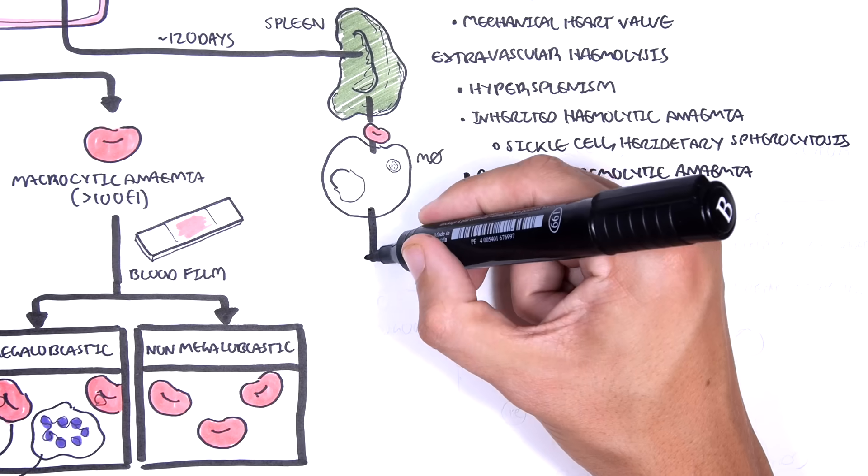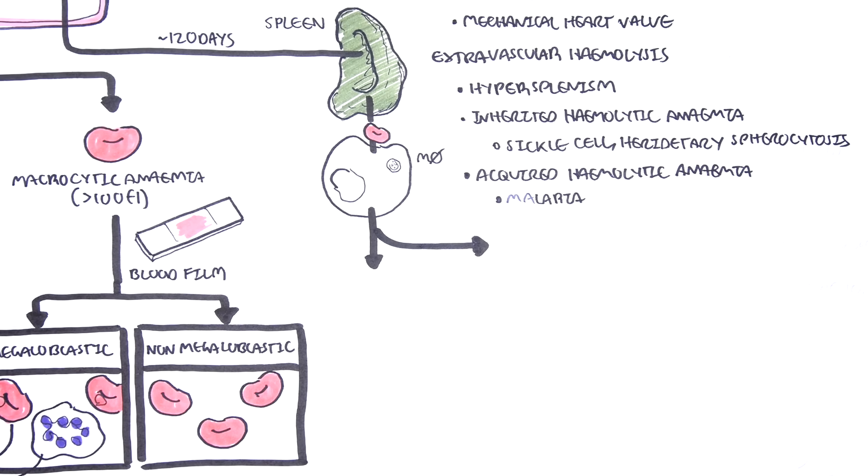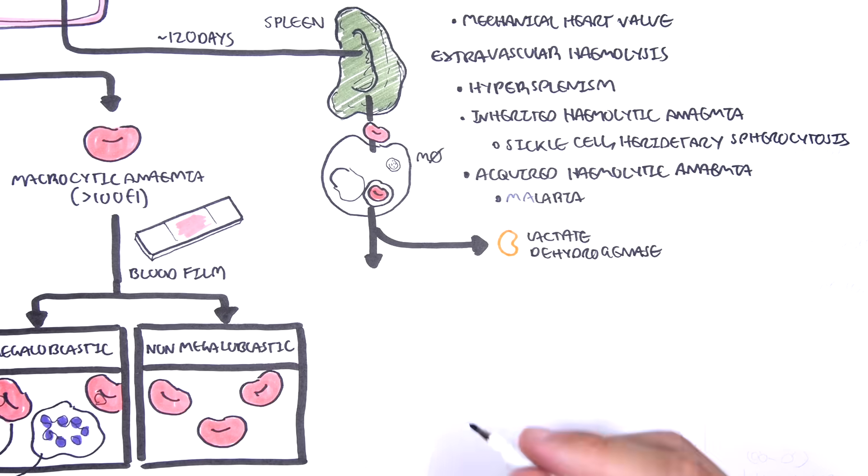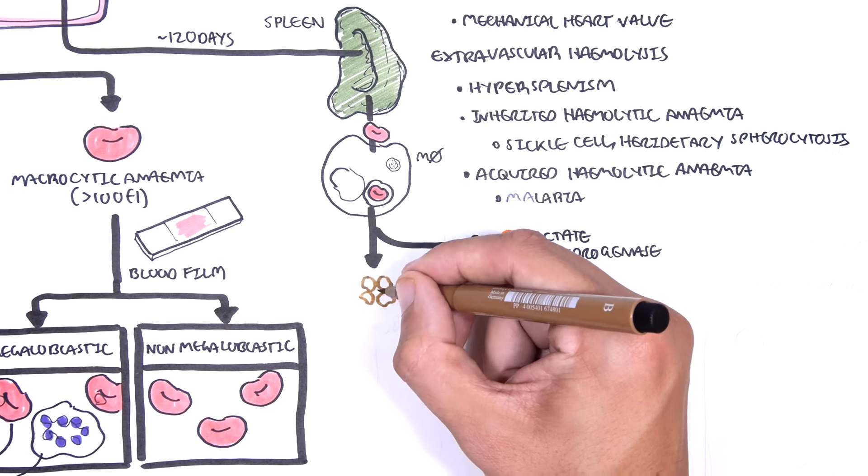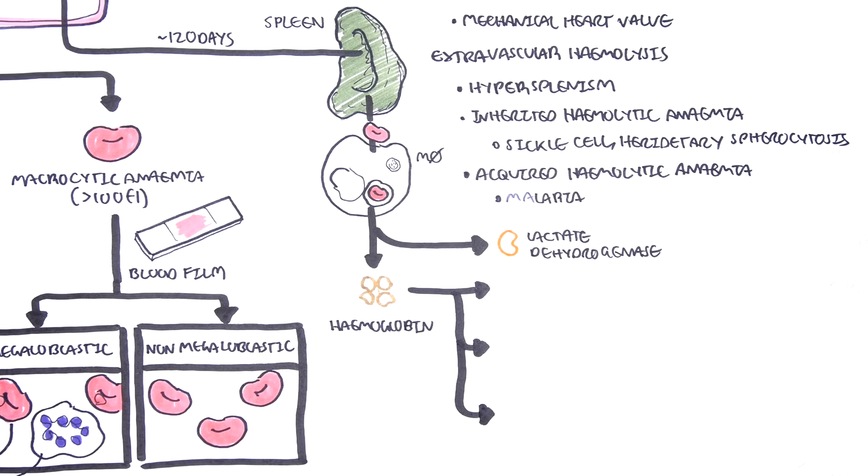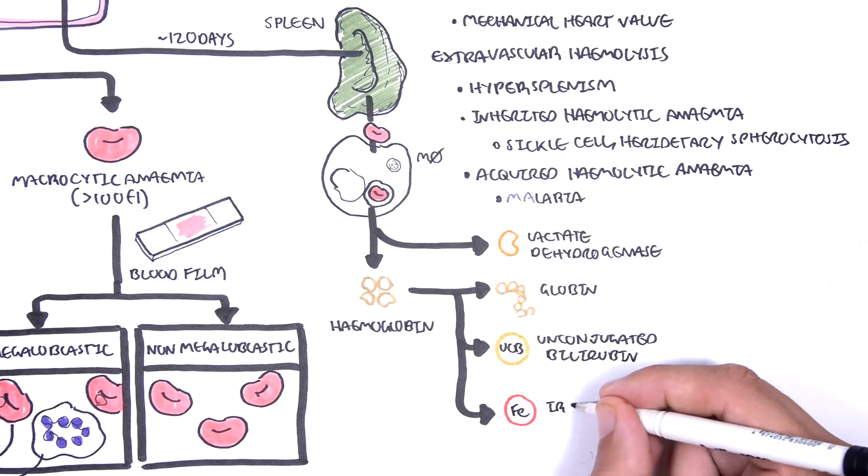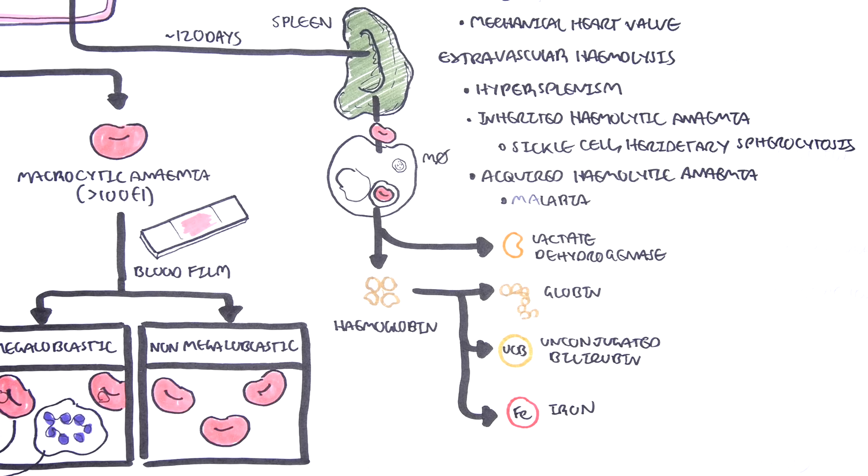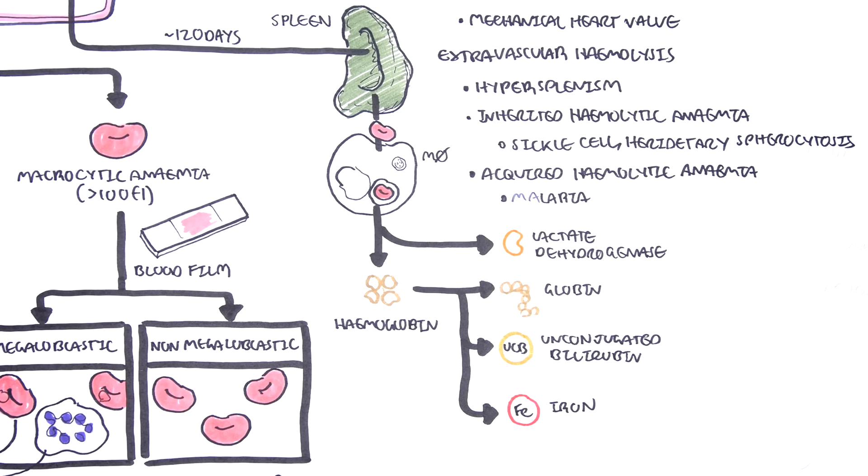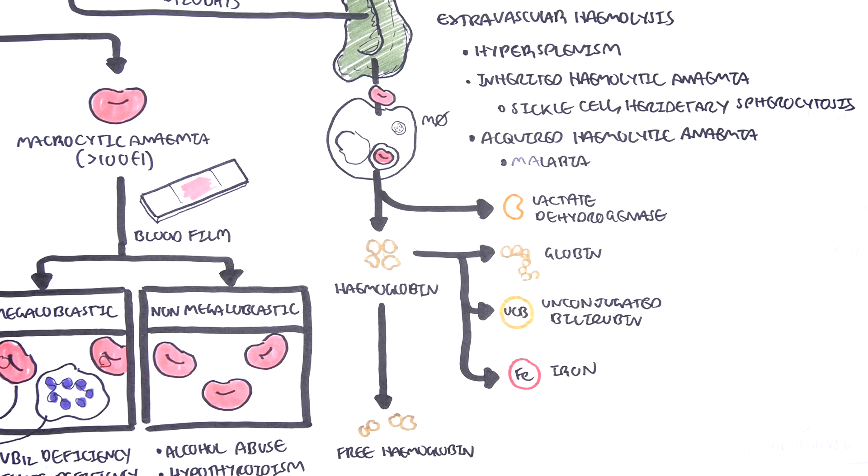When a red blood cell gets destroyed they release a number of things which are important to measure to see whether someone has hemolytic anemia. Red blood cell destruction causes the release of lactate dehydrogenase. Red blood cells are made up of millions of hemoglobin molecules. When hemoglobin is broken down you get globin which is a protein, unconjugated bilirubin and iron. Usually the body is able to clear all these byproducts of red blood cell destruction up. However in hemolysis you have overwhelming red blood cell destruction and as a result you can also have free hemoglobin in circulation. Luckily there are molecules which float around our body which help clear up these free hemoglobin molecules. These are called haptoglobins.